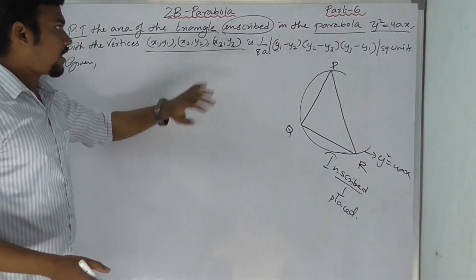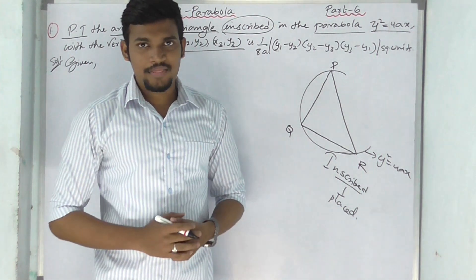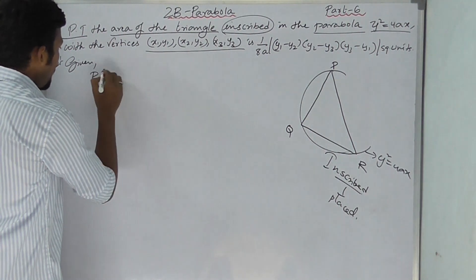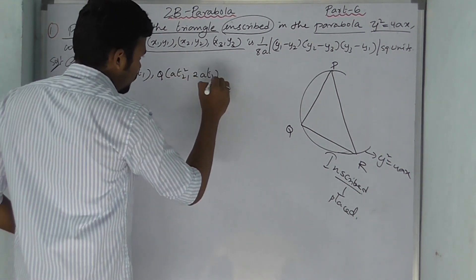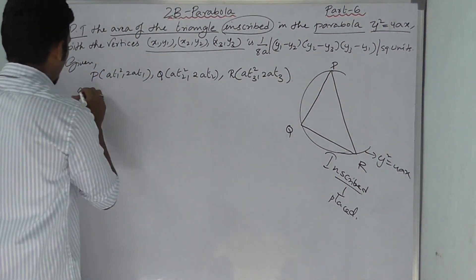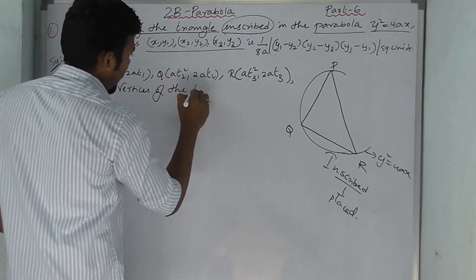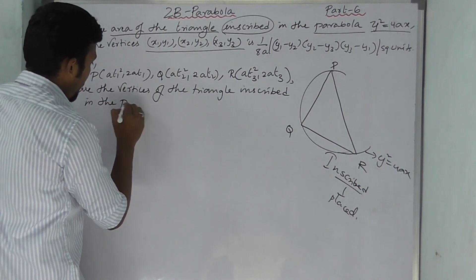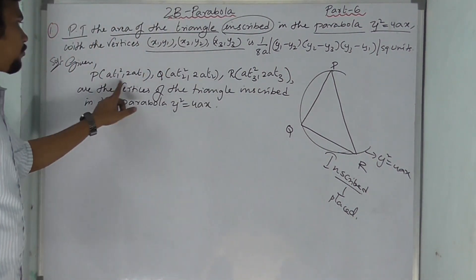The coordinates are: x1, y1; x2, y2; x3, y3. Given P = (at1², 2at1), Q = (at2², 2at2), R = (at3², 2at3). These are the three vertices of the triangle inscribed in the parabola y² = 4ax. You have to remember these parametric coordinates.